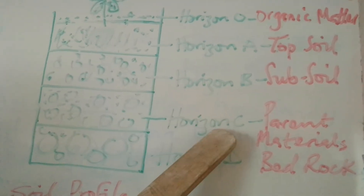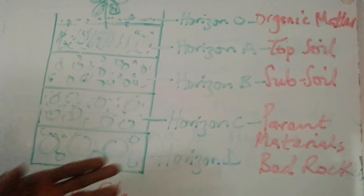Then when you look at the parent materials — another layer you need to know — that is a factor that affects the soil condition. You have the parent materials, and afterward you have the bedrock. This is how the soil profile looks and how it graduates through the horizons.